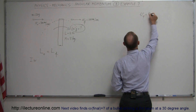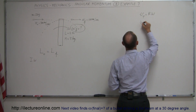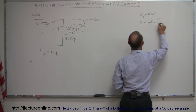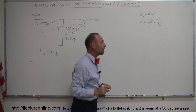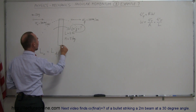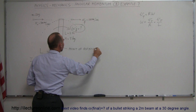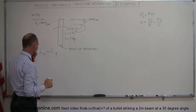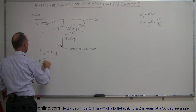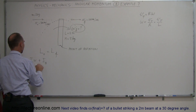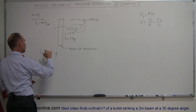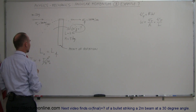The tangential velocity is equal to R times omega, so omega equals the tangential velocity divided by the radius. In this case, that's the tangential velocity divided by the length of the beam, because that's the distance from the point of rotation. So the initial angular momentum is the moment of inertia of the bullet times its angular velocity, plus the moment of inertia of the beam times the initial angular velocity of the beam — which is zero since the beam is stationary, so that whole term goes to zero.